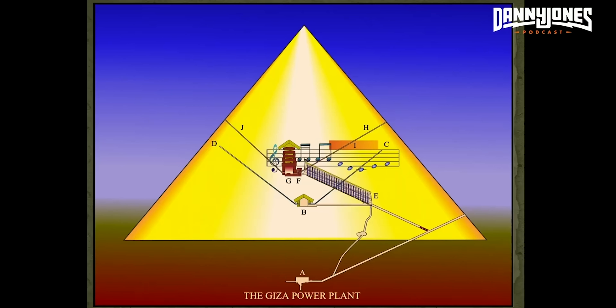That changed after research on the Gieser-Tesla connection. So what is the specific function of A, the subterranean chamber? In the Gieser Power Plant Theory, A is a chamber that contains the means to drive vibrations into the earth.